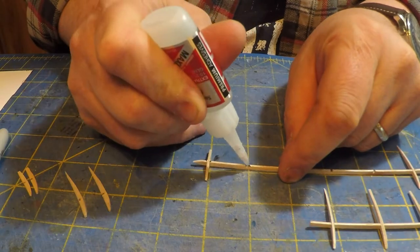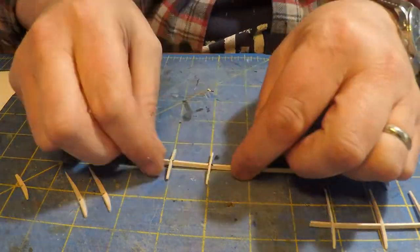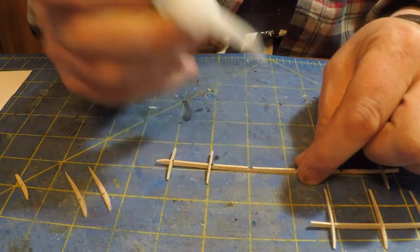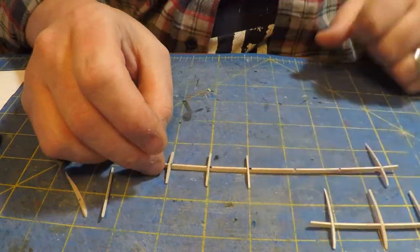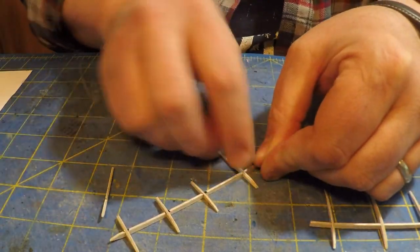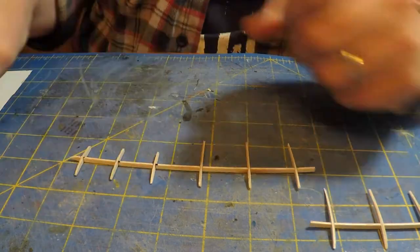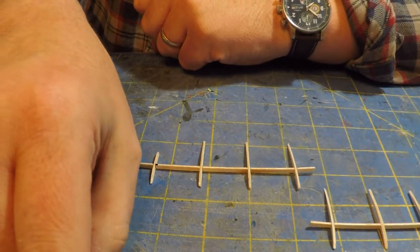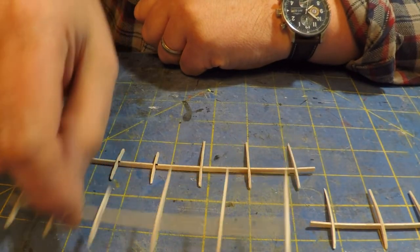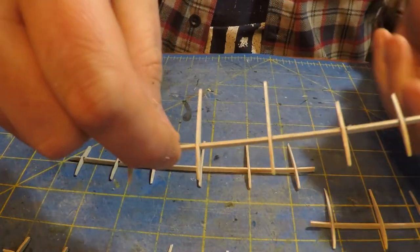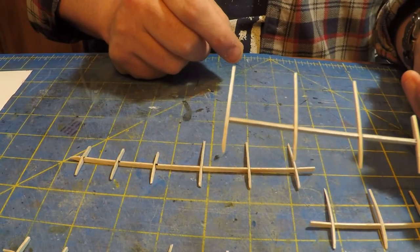Then you just keep doing this all the way down the line. I sped this up because you'll fall asleep otherwise. I put those ribs on, then I go to the longer ribs. I got cavalier there and put glue on two of them at once, but you just adjust as you go and make sure it's relatively straight. I did all the others off camera so they're all ready now to actually be skinned.